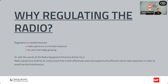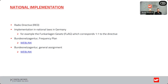The Radio Equipment Directive Article 3 Paragraph 2 states: radio equipment shall be so constructed that it both effectively uses and supports the efficient use of radio spectrum in order to avoid harmful interference. The Radio Equipment Directive is the European standard. In Germany, for example, we have the national law Funkanlagengesetz, which corresponds one-to-one to the directive, along with the frequency plan and general assignment from the Bundesnetzagentur. These links are included in the presentation you will receive after the session.